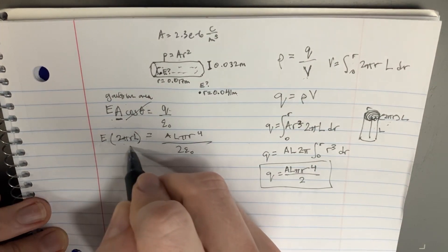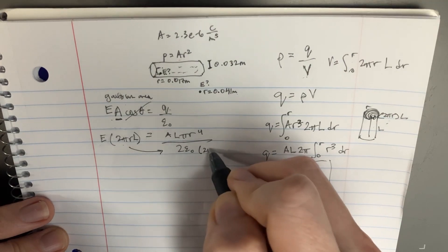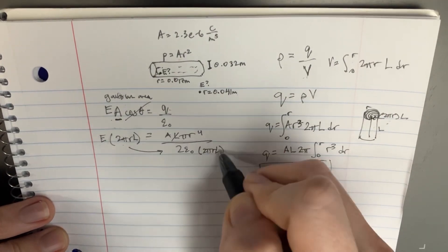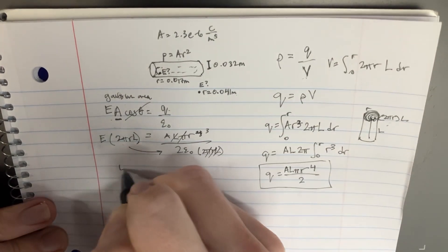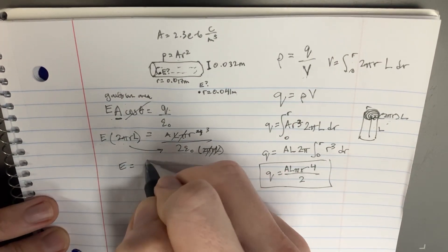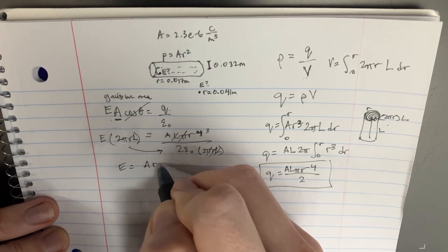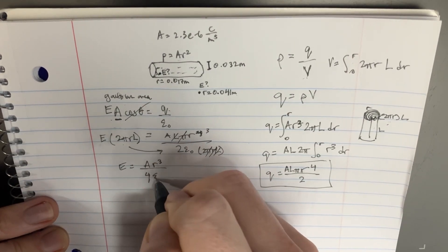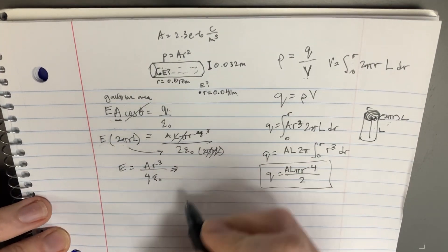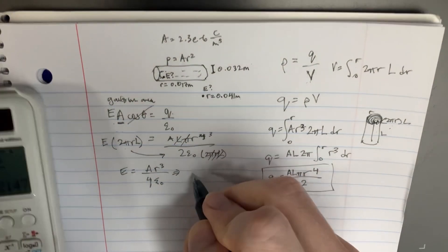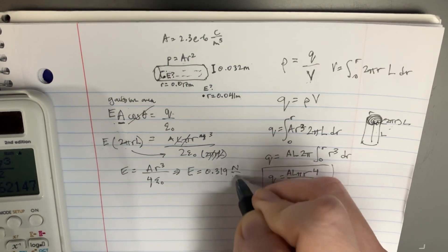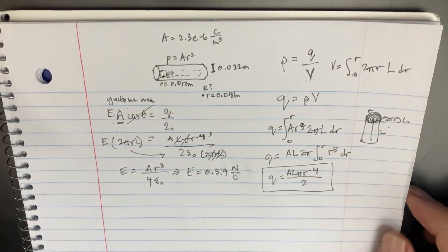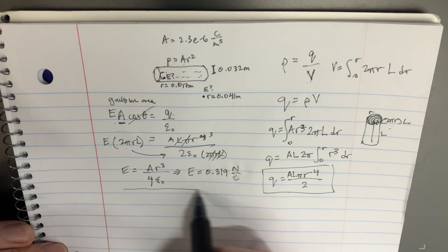And this will go to that side. So we get 2πrL here. This will cancel. And this will cancel. And this will become a three. So we get the final answer here is A, r to the third, divided by 4 epsilon naught. And this is for part one. So the solution to this one is just going to be E equals 0.319 Newtons per Coulomb. Now that's going to be the solution for the first problem.